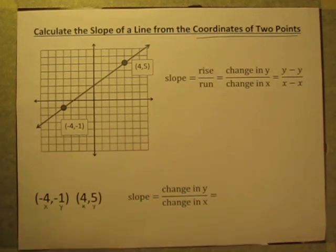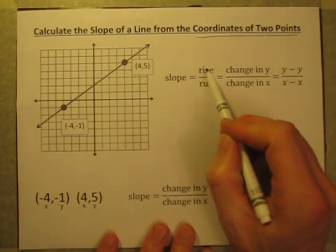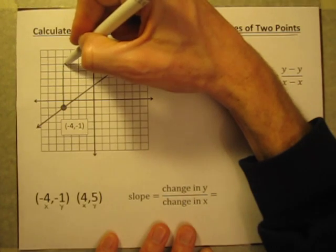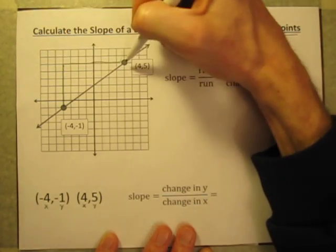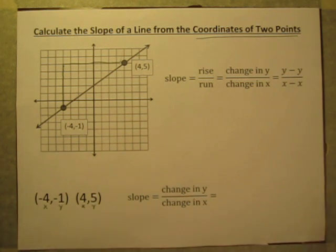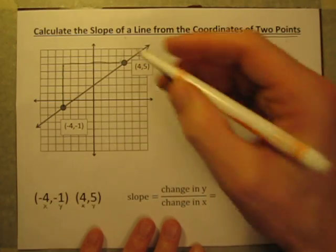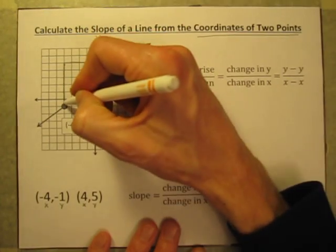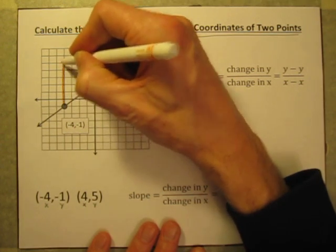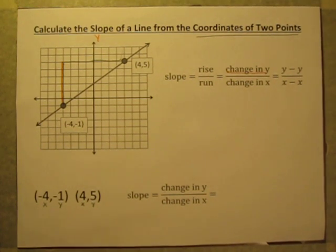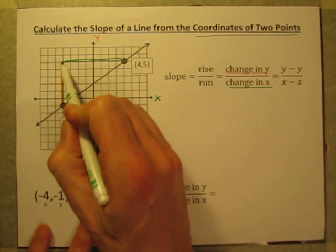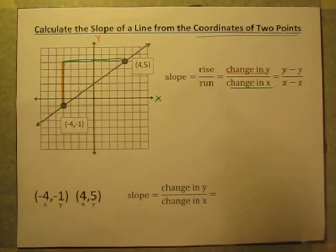One option would be to graph the points and use what we already know about how slope is equal to rise over run. We could see how far we're going to go up, and then we could see how much we're going to go to the right to get our rise and our run. Your rise is going to be equal to the change in y — that's how much the y-values change as you move up the graph. And the run going this way is your change in x-values, because here is your x-axis.